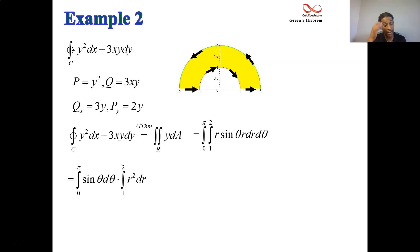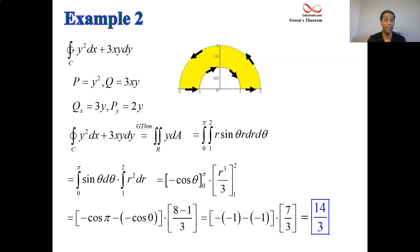So we get r cubed over 3, and we get negative cosine theta. Negative cosine theta gets evaluated from pi to 0. r cubed over 3 gets evaluated from 2 to 1. You end up with negative cosine of pi minus the cosine of 0. Be careful there. Minus negative the cosine of 0. And then 8 minus 1 over 3. So the cosine of pi is a negative 1, so that's going to be a 1 plus another 1. So 2 comes out of the first and 7 thirds. Final result? It's going to be 14 thirds. All right, that's example 2.